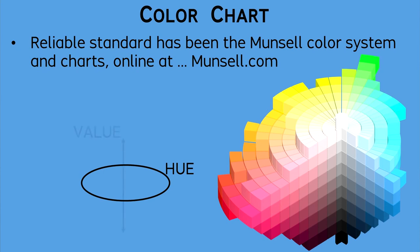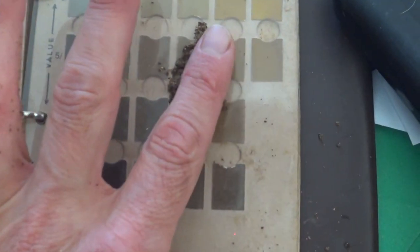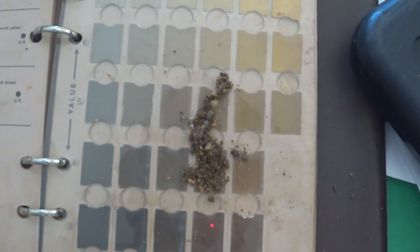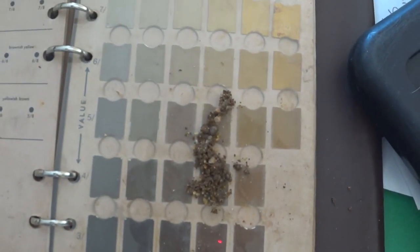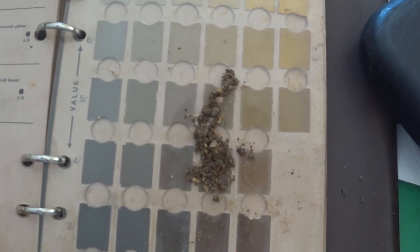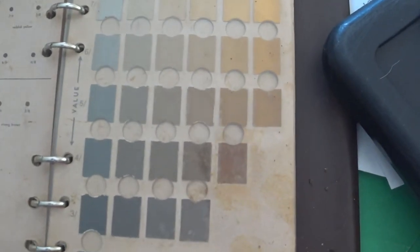Within each hue, the value refers to the gradation from dark to light. The chroma refers to the degree of variance from a pure color in terms of the amount of saturation of the hue. Using a standard color chart like in the Munsell system, you can coordinate the hue with its value and chroma.